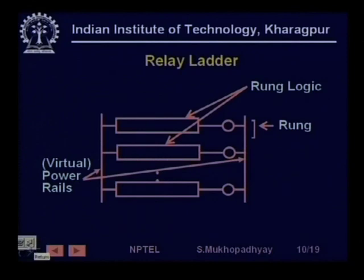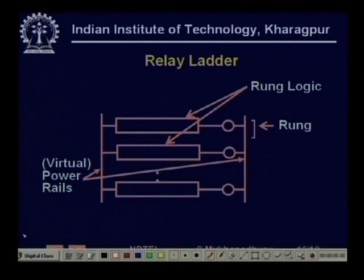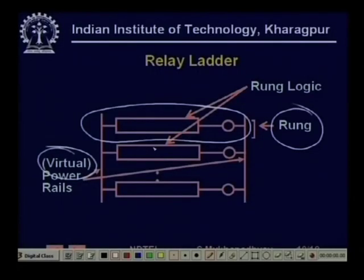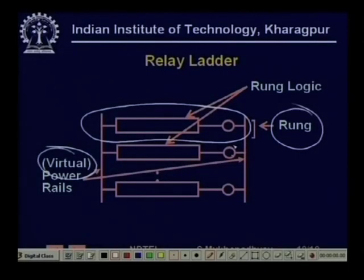The kind of PLC programs we will see are organized like relay ladders, even though there is no real relay. We draw these power rails which are virtual — entirely an abstraction. Each program statement is called a rung. These relay ladder logic programs are a series of rungs between two virtual rails. The left part of the rung is a network of various ladder logic elements like contacts and timers, followed by an output coil.